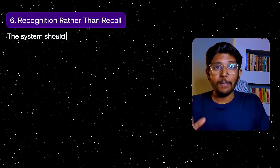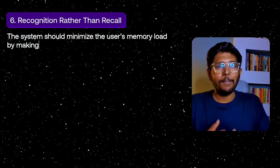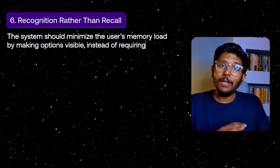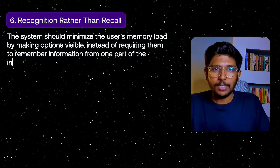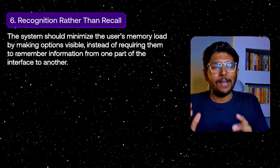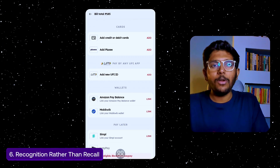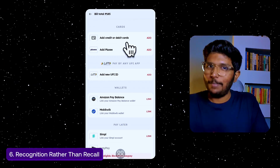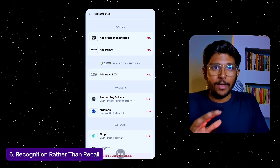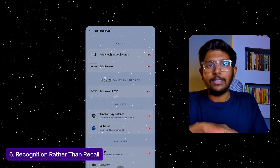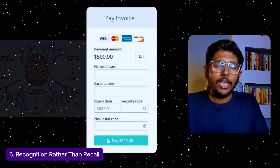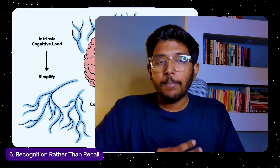Sixth principle: Recognition Rather than Recall. Minimize the user's memory load by making options visible. For example, in a food order app, for payment options you can show debit card, UPI, and credit card. By entering payment information once and saving it, you reduce memory load and allow users to quickly use the system, especially when multi-tasking.